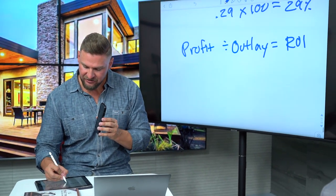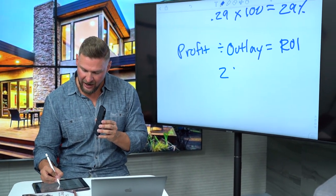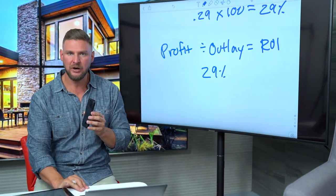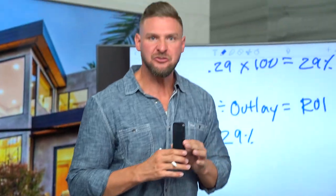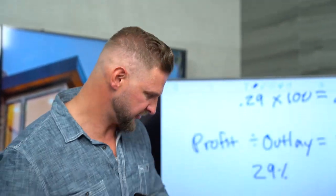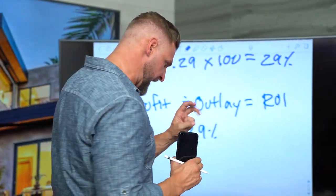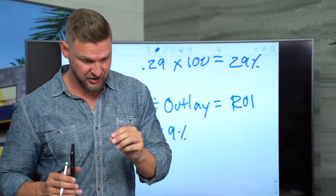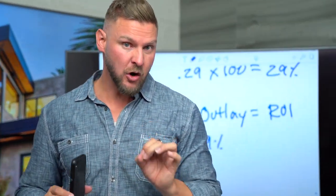In this case, 29,000 divided by 100,000 equals 0.29. Multiply that by 100 and it gives you 29%. Is 29% a good ROI? Is it double digit? Yes. Is it a strong double digit? Anything over 20% is a strong double digit.